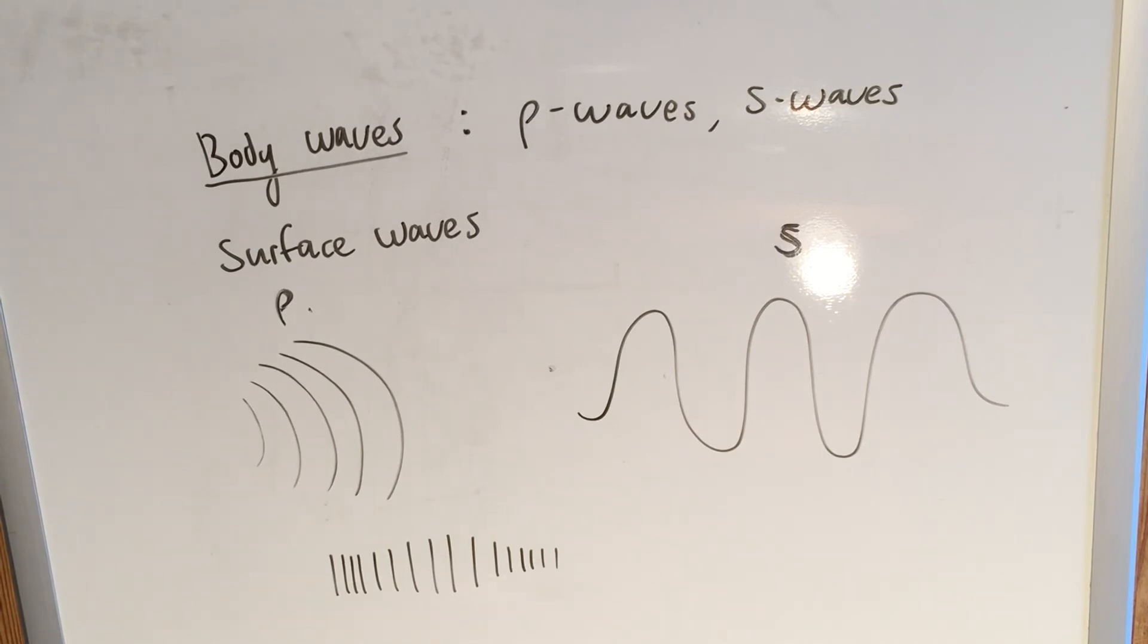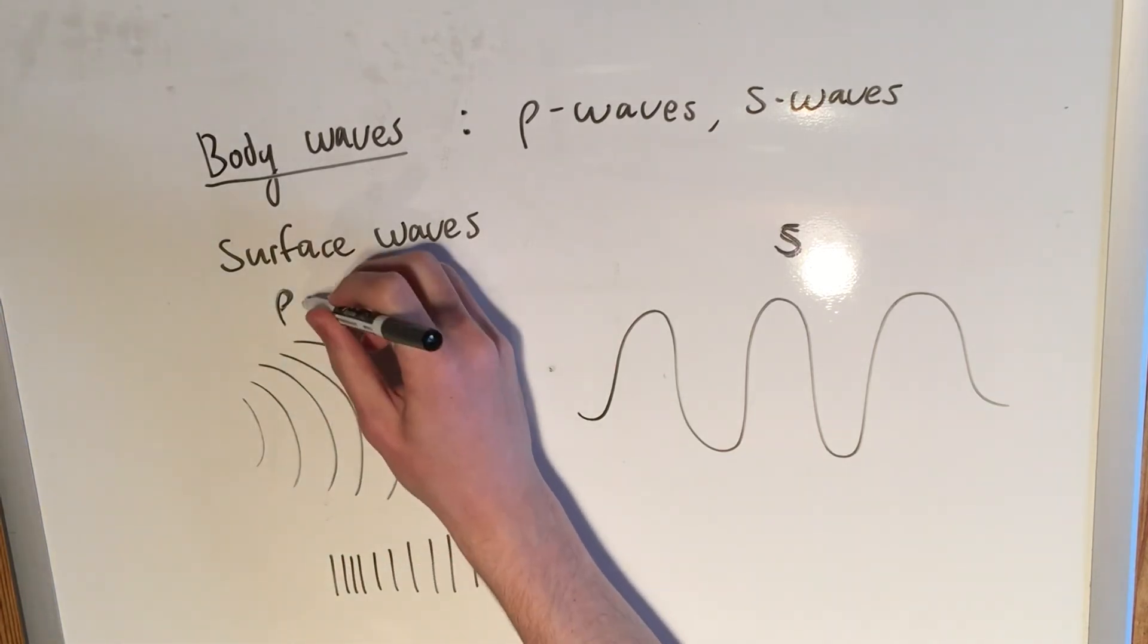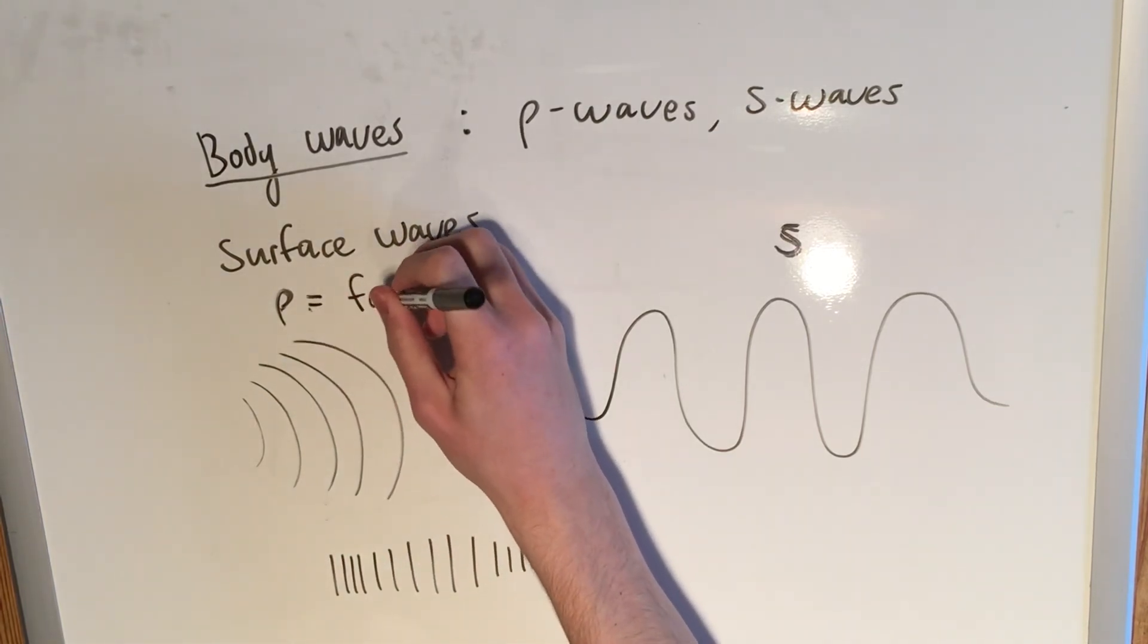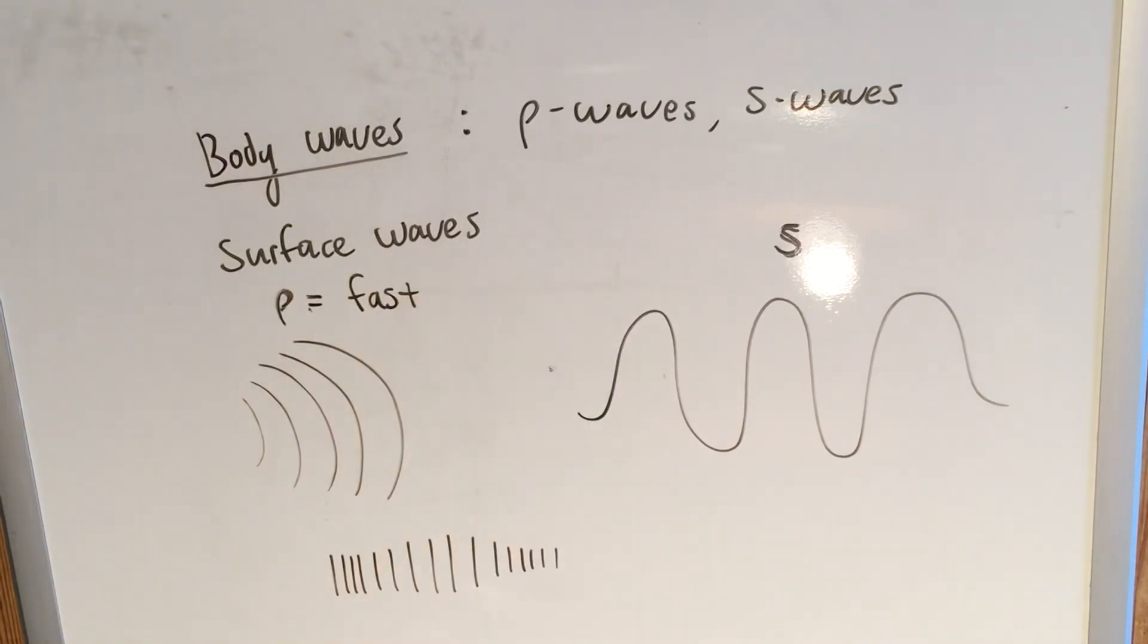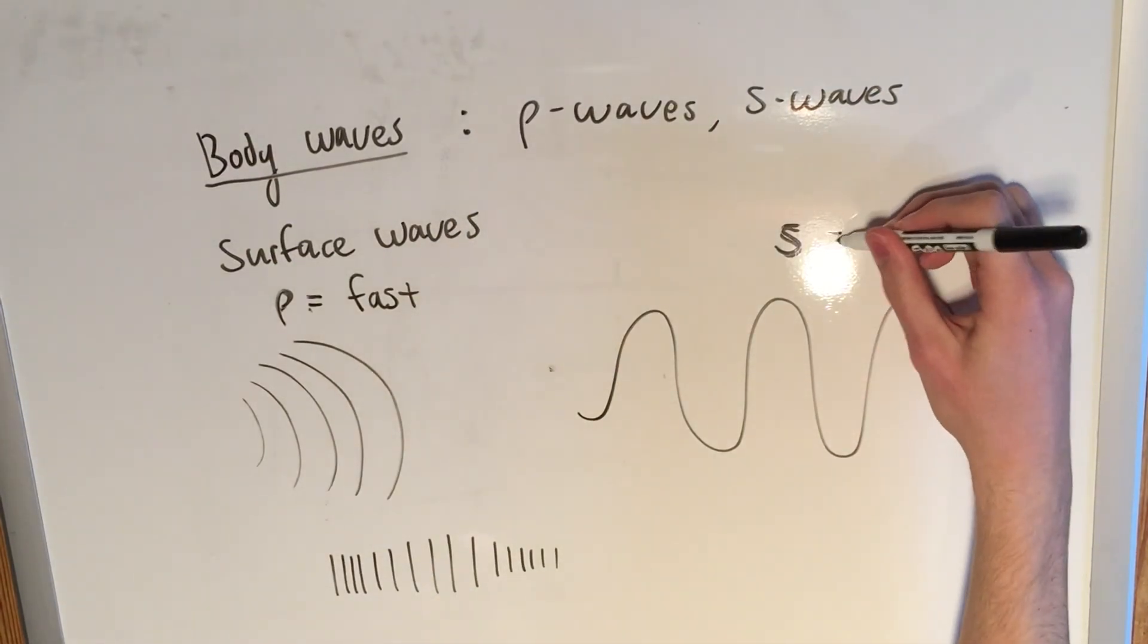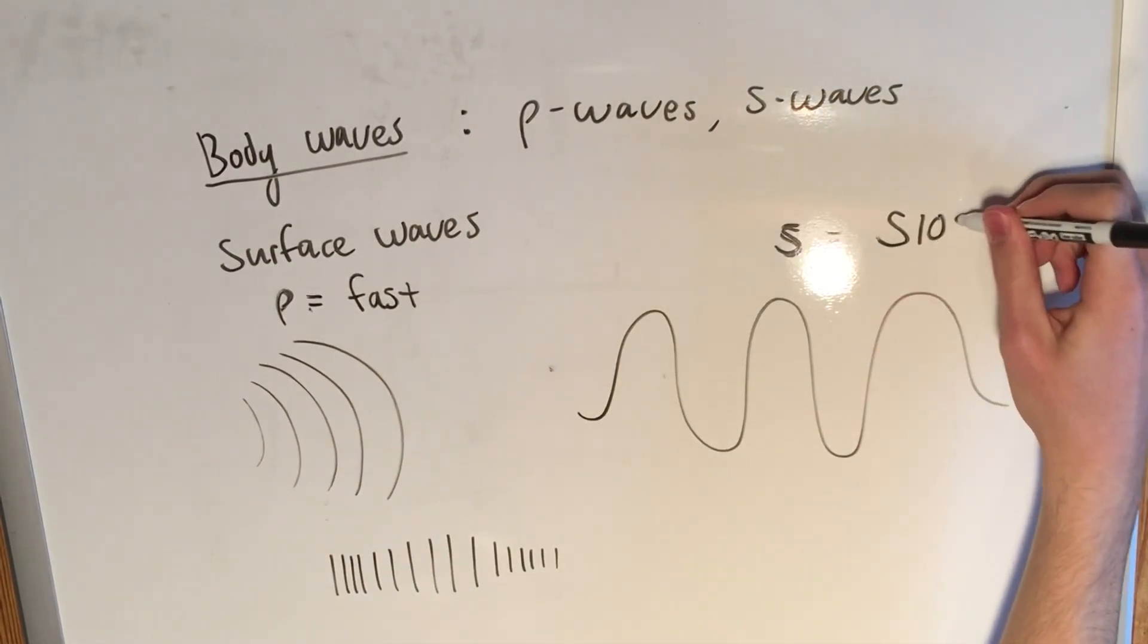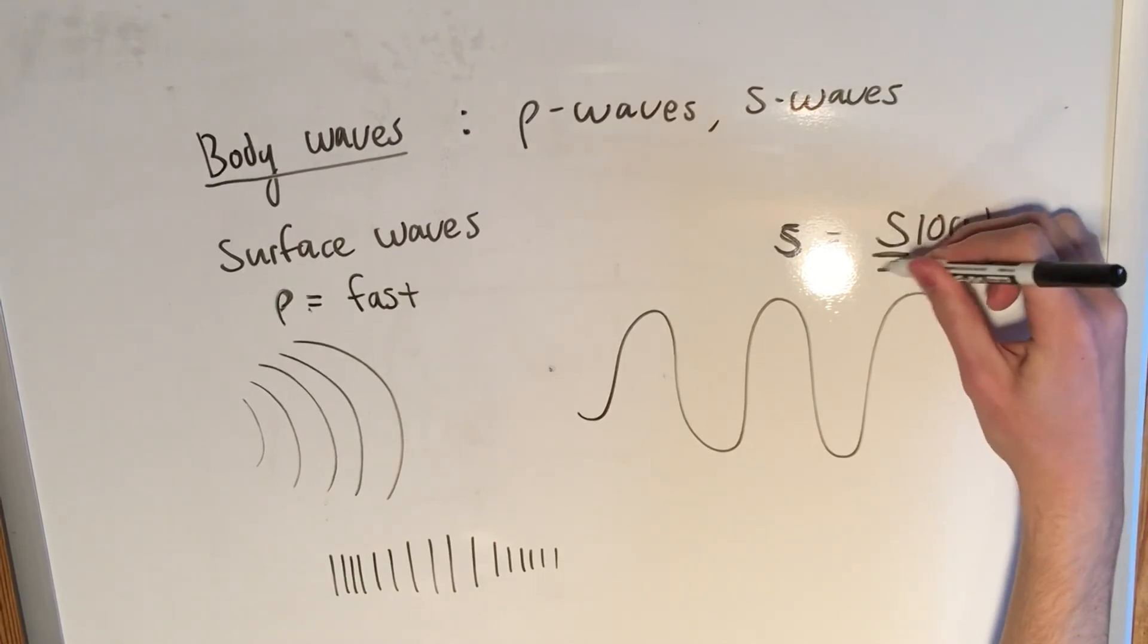I'll delve into this more in a later video and looking at how they impact seismograms. But the key distinction to know for right now is that P waves are the faster. Or if you prefer, S waves, S for slow, right? S waves are slower.